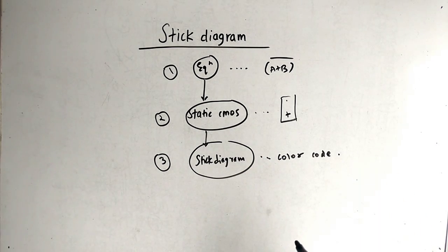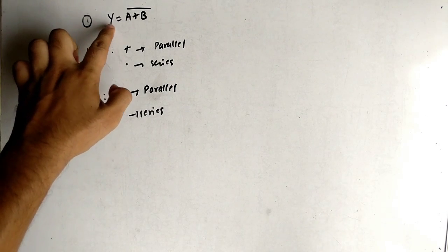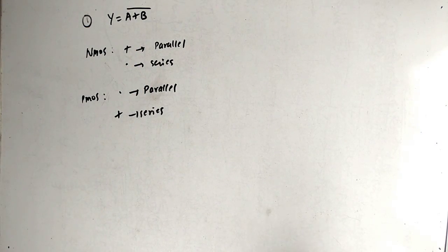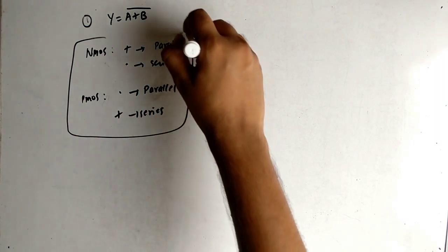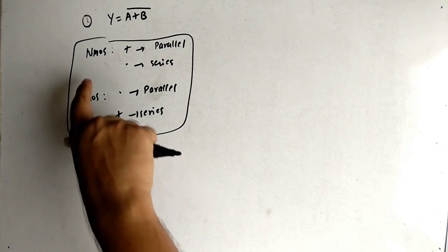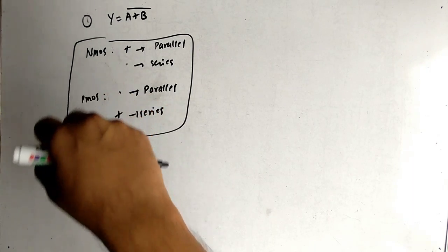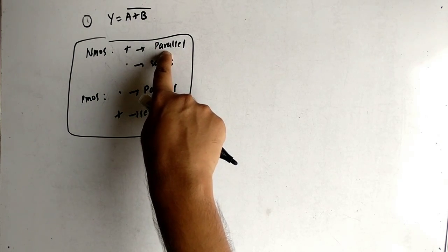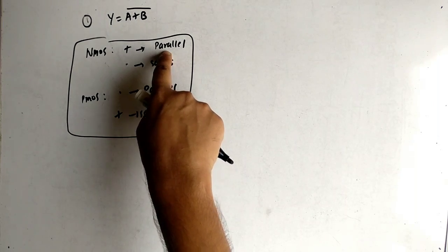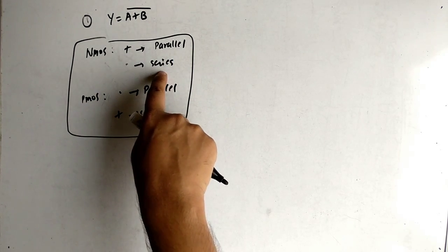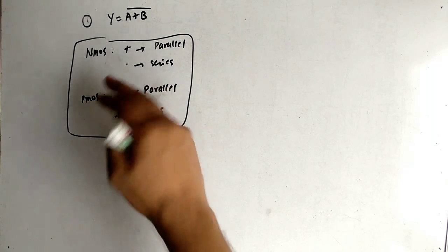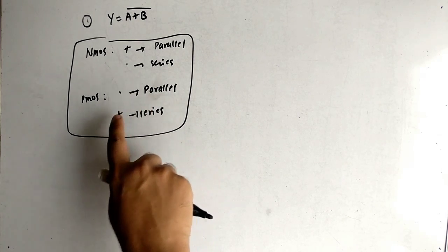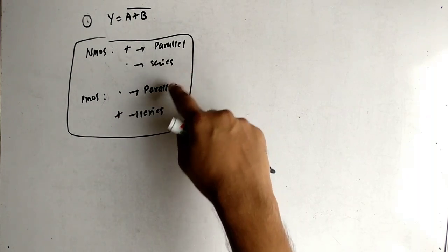Our first example is Y = (A + B) bar. The question is in the whole bar form, so the first step is clear. For the second step — drawing the static CMOS circuit — we need to know: for NMOS, when terms are added they are in parallel, and when terms are multiplied they are in series. For PMOS the logic is opposite: when terms are multiplied they are in parallel, and when terms are added they are in series.